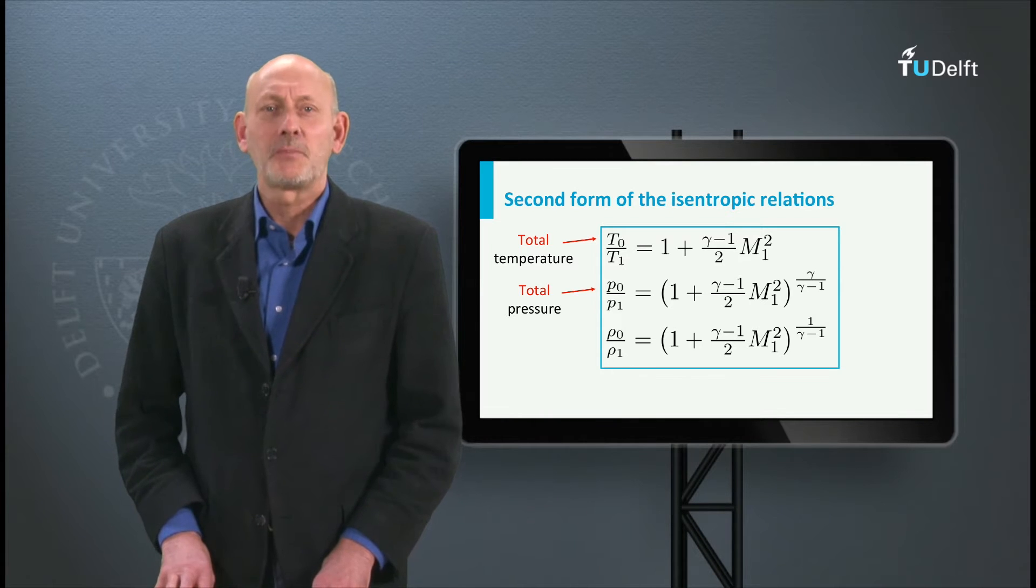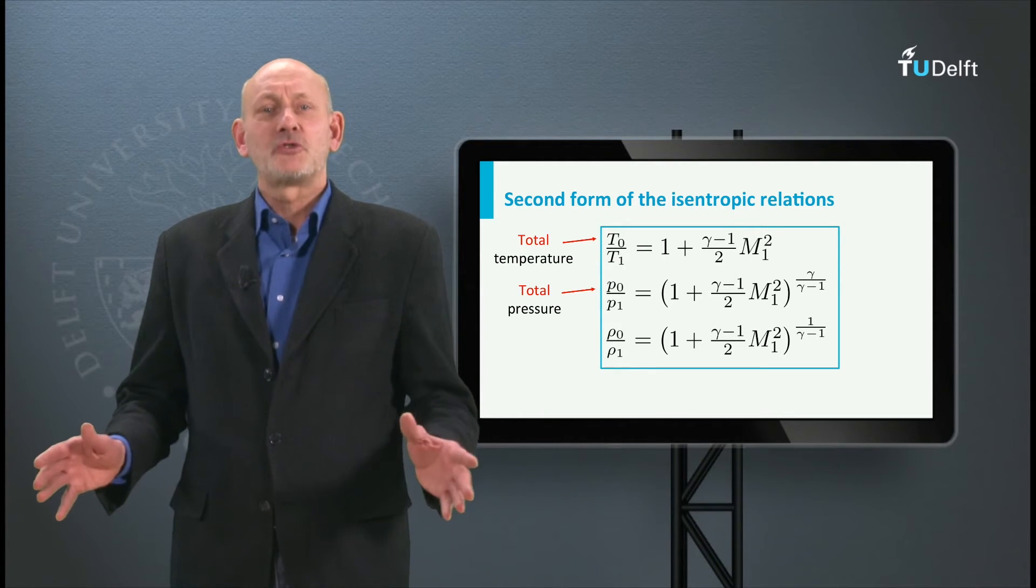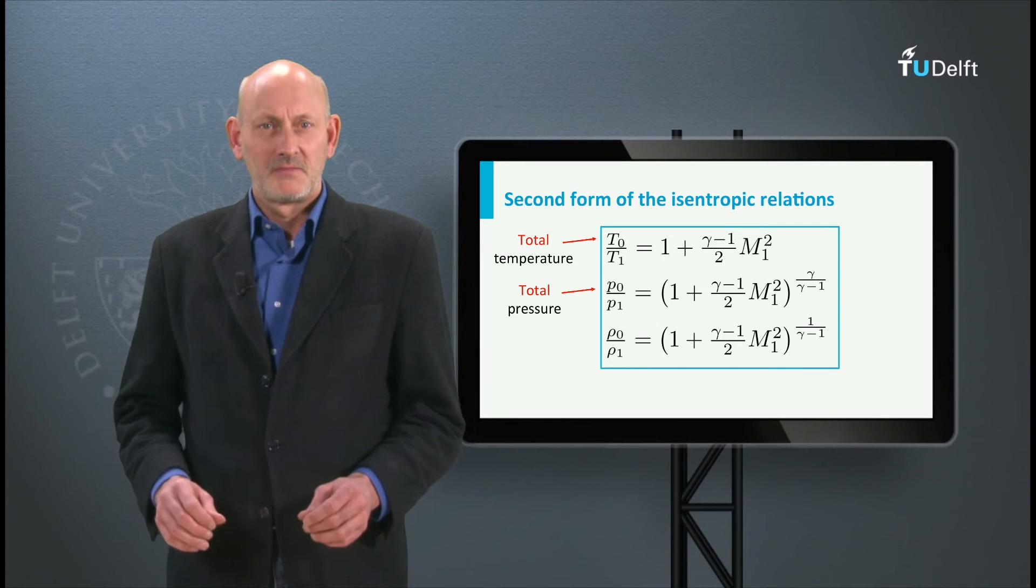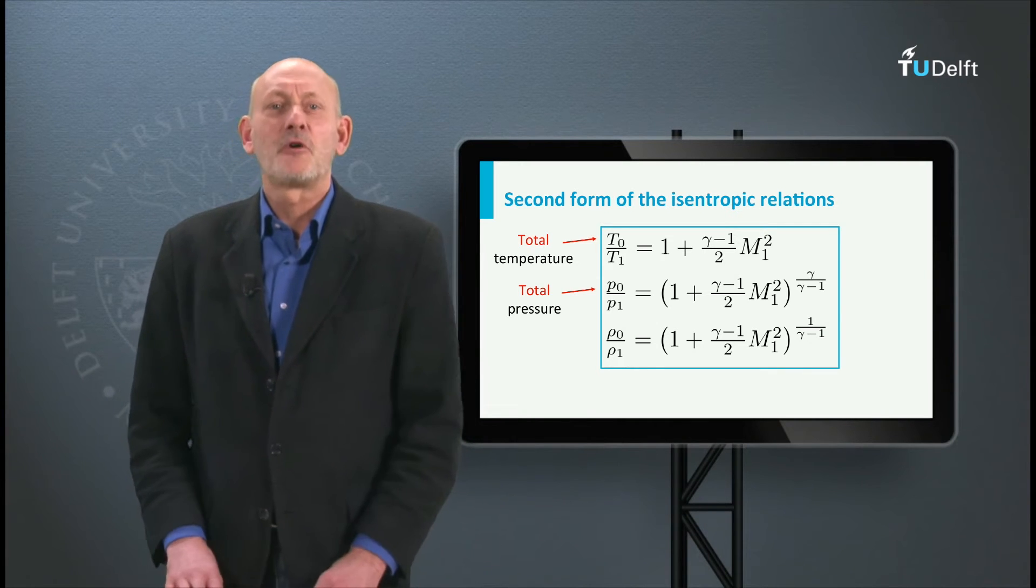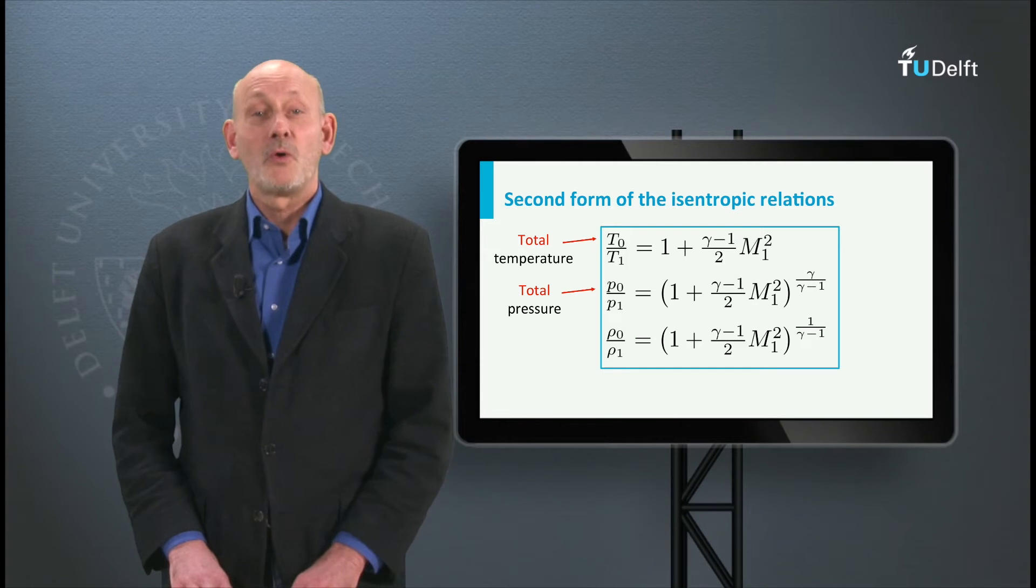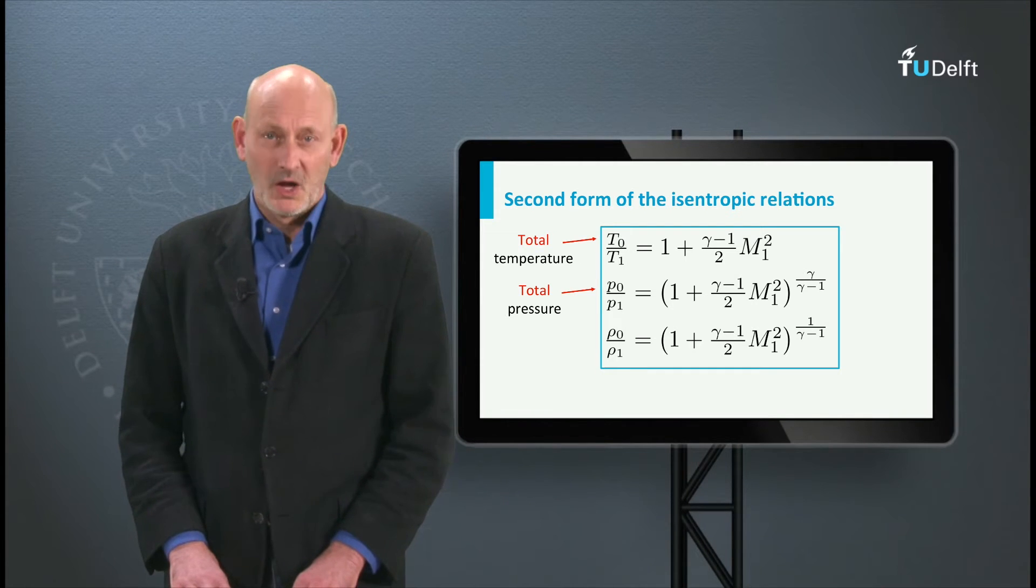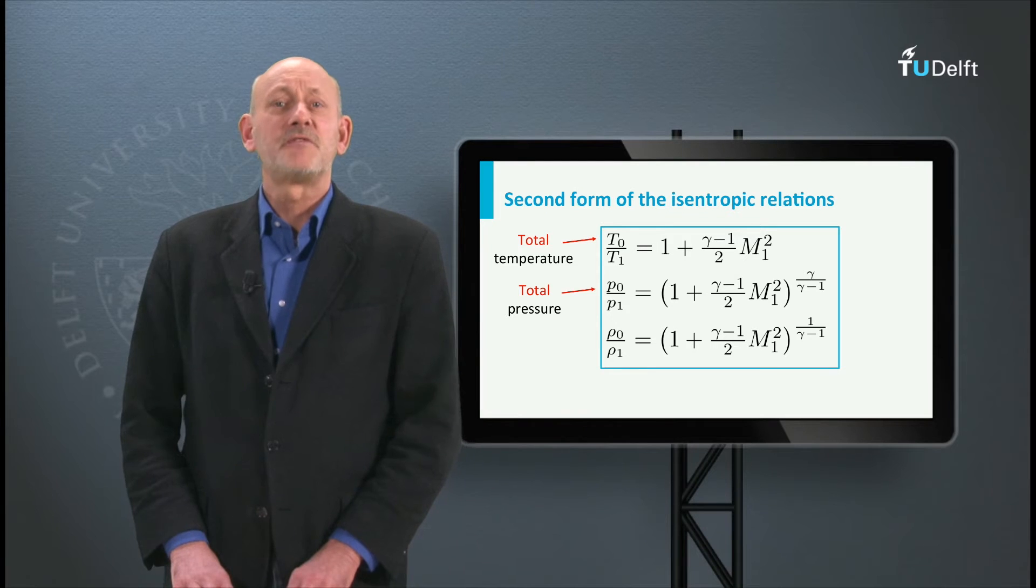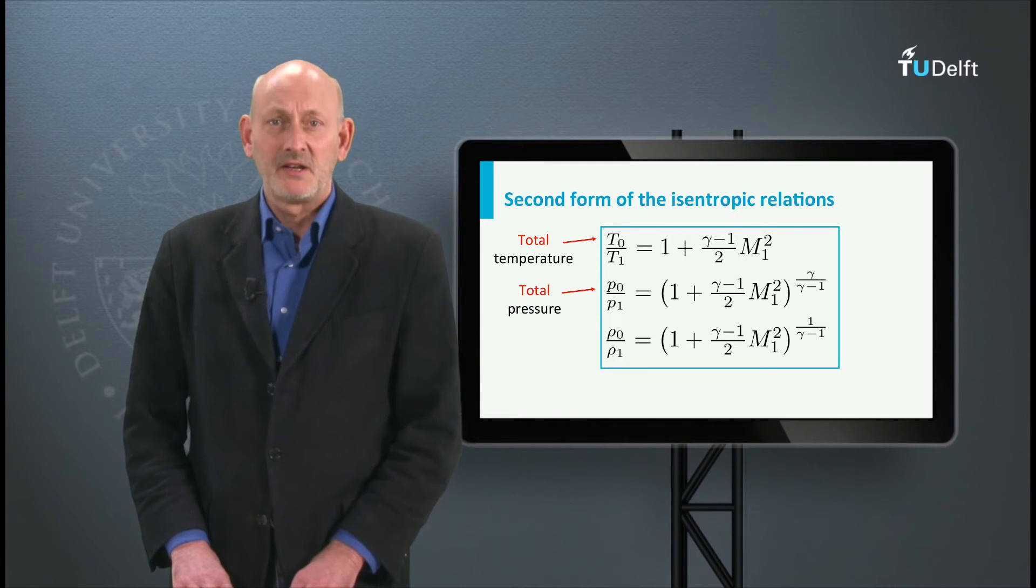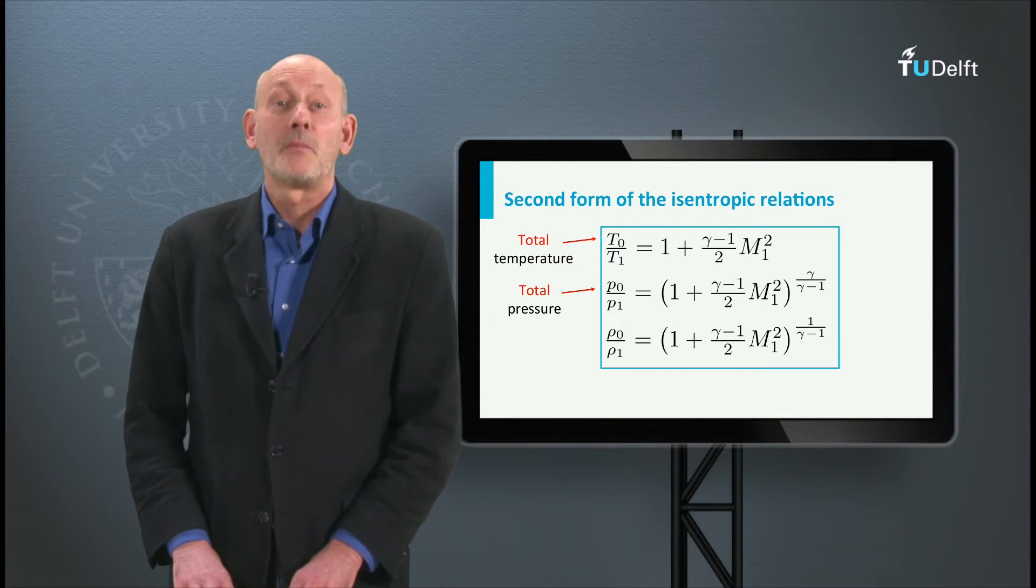These equations all apply to compressible flow. When do we actually call a flow compressible? Let us look at the equation for the density ratio. Rho 0 divided by rho 1 is 1 plus gamma minus 1 divided by 2 times M1 squared to the power 1 over gamma minus 1.